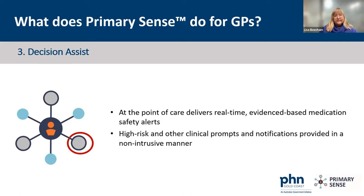The tool uses de-identified data and we can switch on functionality so that things like a new low eGFR value that comes through will generate a medication prompt — for example, that metformin is contraindicated when eGFR has dropped below 30, and there are different thresholds for digoxin prescribing as well.